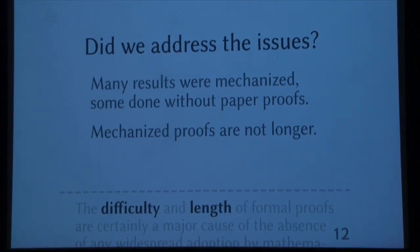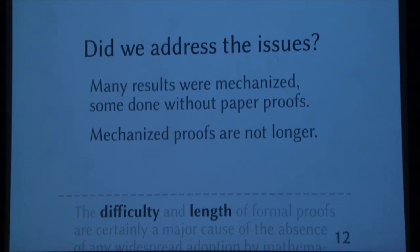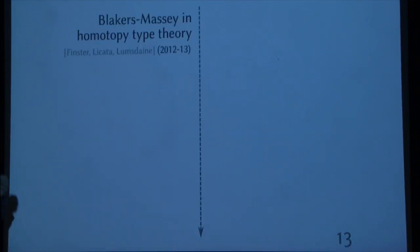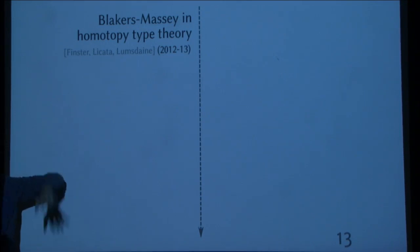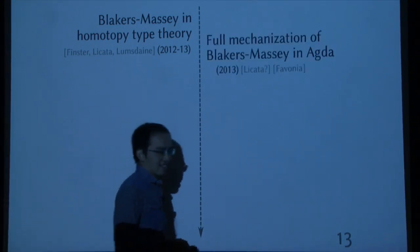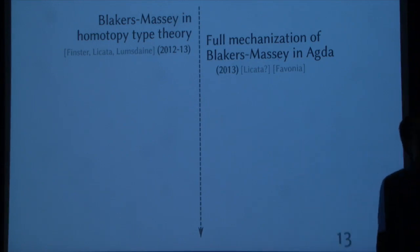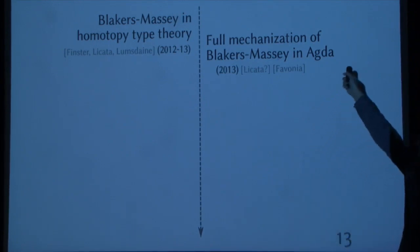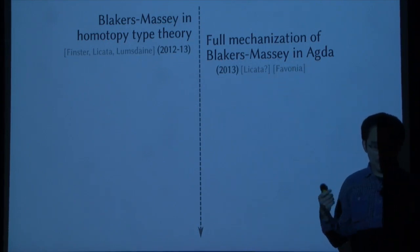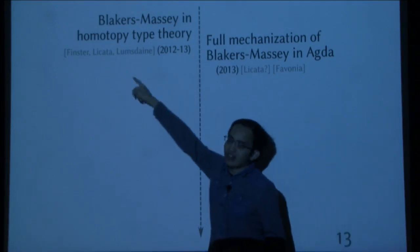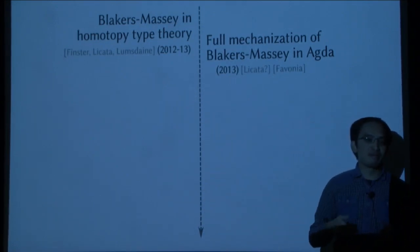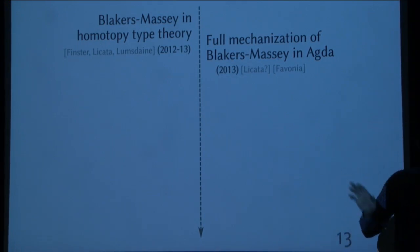And now I want to show you a very interesting story about the interaction between the mechanized proofs and the paper proofs. So it started right at IAS here, the special year during 2012 and 2013. So there are three people that came up with and managed to prove the theorem called Blakers-Massey Theorem in the homotopy type theory. And then later on, I came to IAS as a visitor, and asked everyone, is there something I can mechanize? And they found this, and we collaborated, and then we did a complete mechanized proof in Agda. And for a long time, that's the story. And they announced the results, but we never found the time to publish a paper.